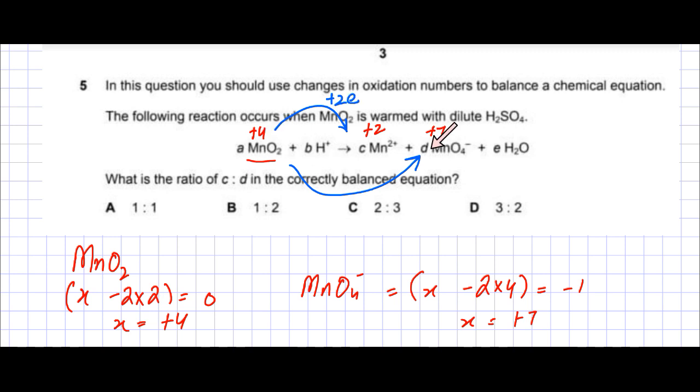While, plus 4 to plus 7, this one, Mn is losing 3 electrons, so it lost a total of 3 electrons. So I need to make the number of electrons gained and lost equal, so I need to multiply both things by some number. So I'm going to multiply this by 3, and multiply this by 2. Then the number of electrons gained and lost would be equal.